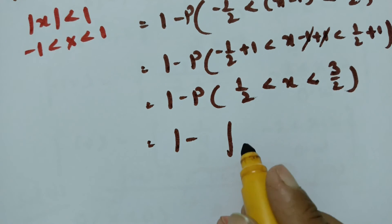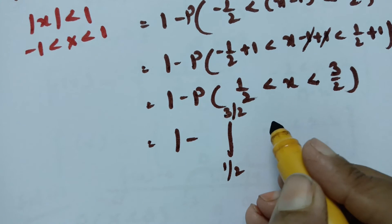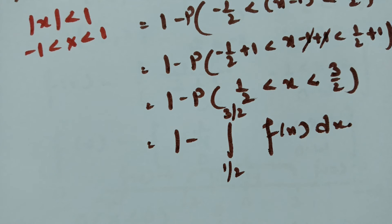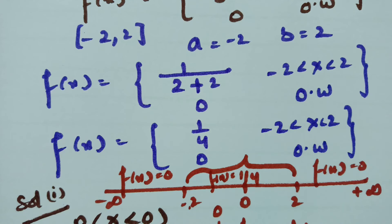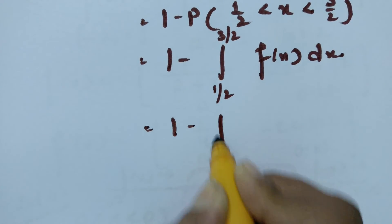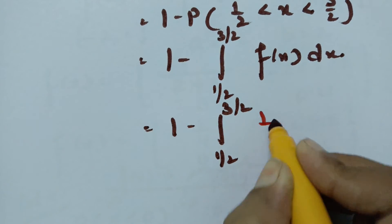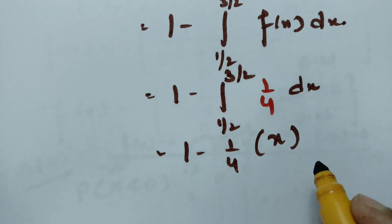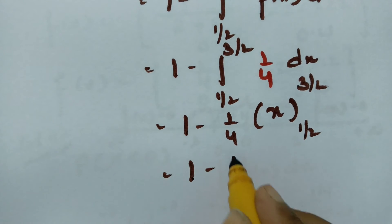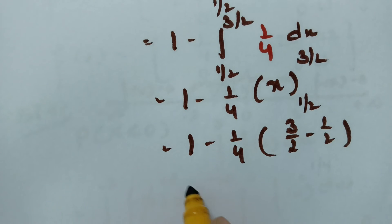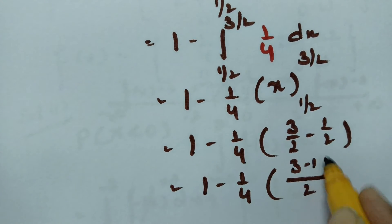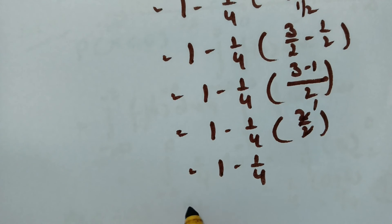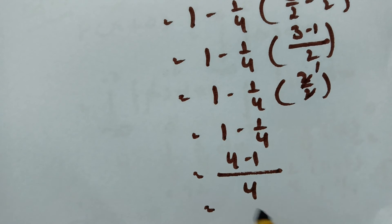We need to calculate the integral from lower limit half to upper limit 3 by 2 of f of x dx. The function value is 1 by 4 between minus 2 and plus 2. Substituting: 1 minus integral from half to 3 by 2 of 1 by 4 dx. This will be 1 minus 1 by 4 times of 3 by 2 minus half, which is 1 minus 1 by 4 times 2 by 2, that is 1 minus 1 by 4. Taking 4 as LCM, this will be 4 minus 1, giving the value 3 by 4.